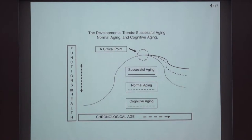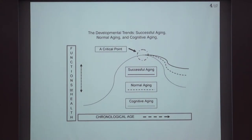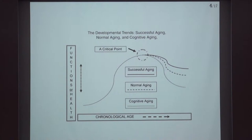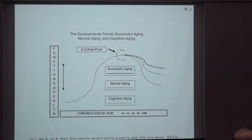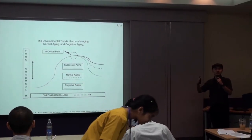One issue we are interested in regarding falls is the cognition — the cognitive system. The cognition is the brain system in our body, like intelligence for solving problems. Why do we study this? Because when people fall, it's just two or three seconds — you fall accidentally. But if you have excellent intelligence or are prepared, you know how to fall and not die. This is what we're interested in.